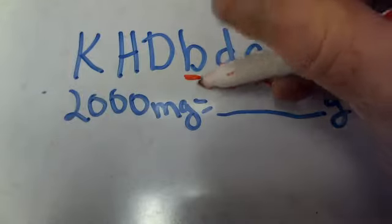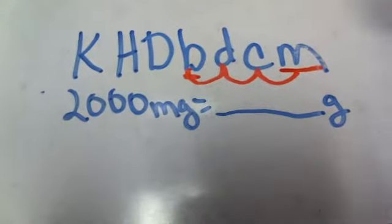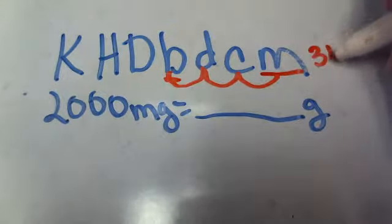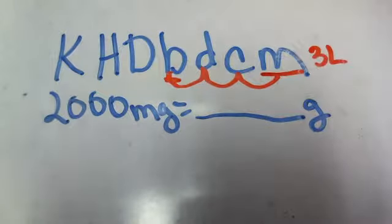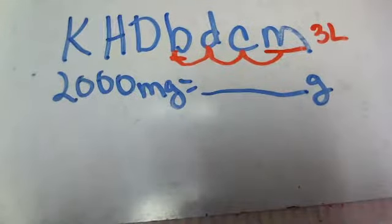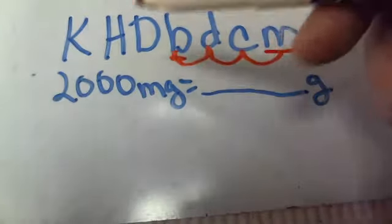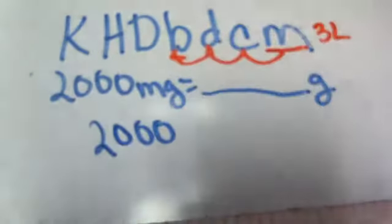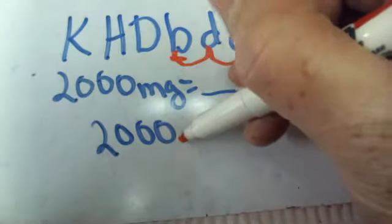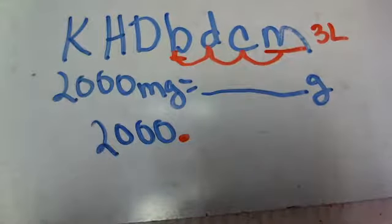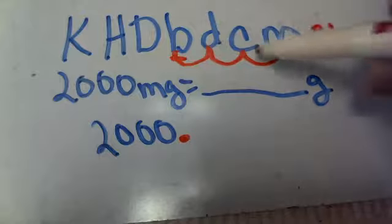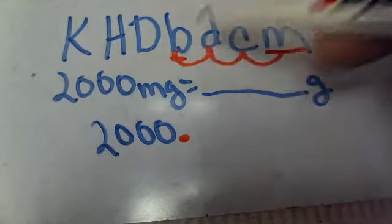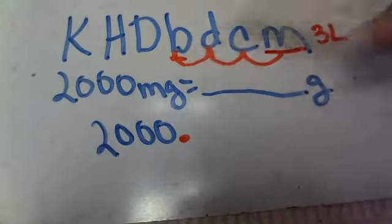And so I'm going to be going, how many spots? 1, 2, 3 spots to the left. So I can write that down, 3 spots to the left. So the next step that I need to do is find out where my decimal is. And when you're looking at the number 2,000, the decimal, that's a whole number. So your decimal is going to be to the right of that whole number.